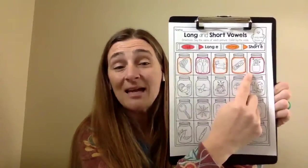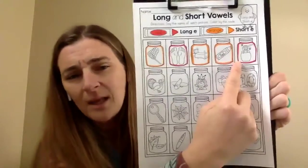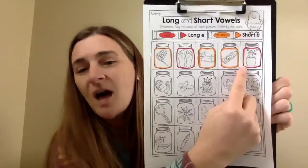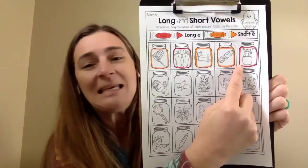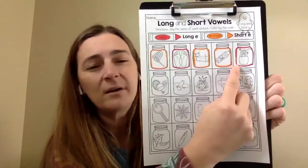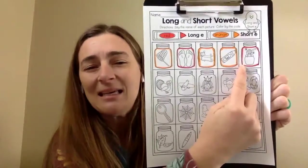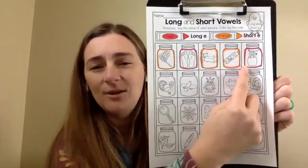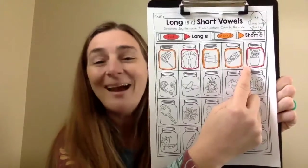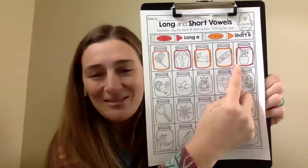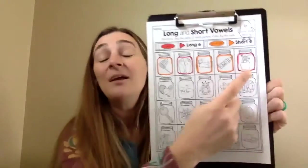And this last picture is a picture of honey. Honey. What do you hear? Honey. Hear the E in there? Yeah. Good job. E for honey. Good. Because we're listening for those sounds. Good job. Very good job.